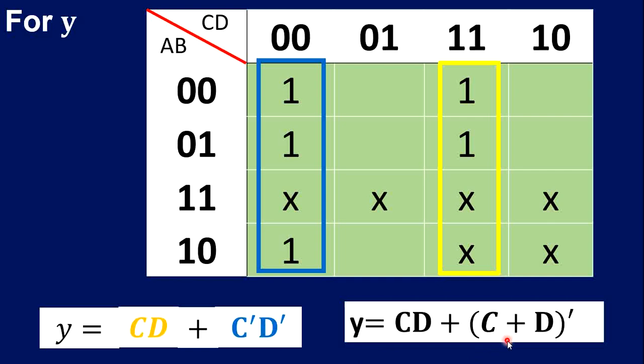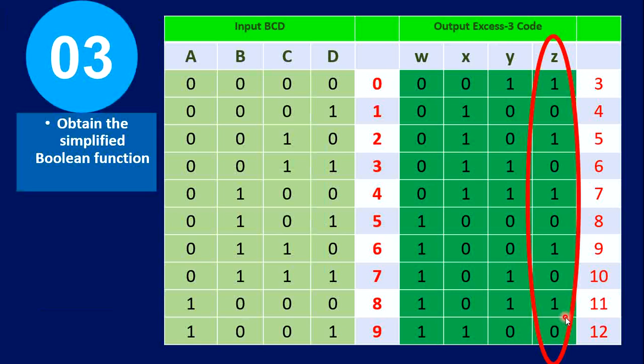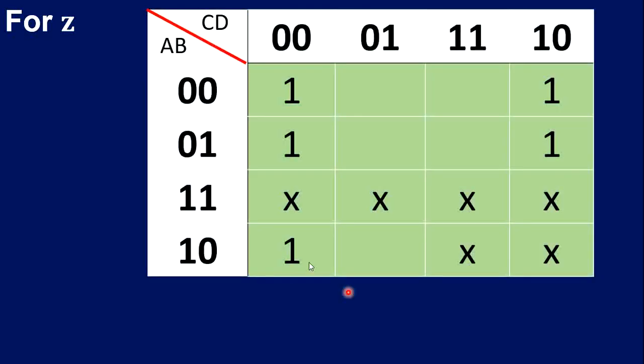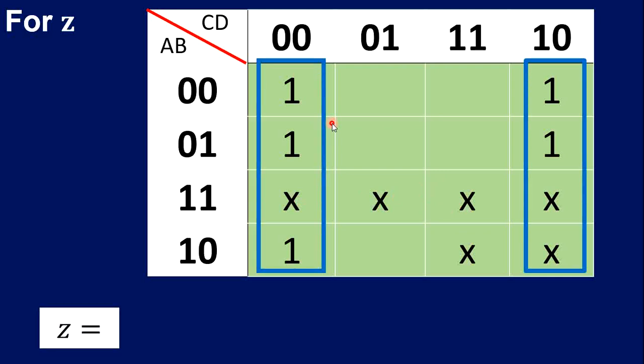Next output is Z. Z is one at zero, two, four, six, eight, and again, ten to fifteen will be viewed as don't cares, that's why we put X at ten to fifteen. How many groups can this be for Z? Just one group, and that is blue. For A and D, there's no common value. So we'll take where they're the same—in the column C, they're different. D is the same, zero. So Z is equal to D prime.